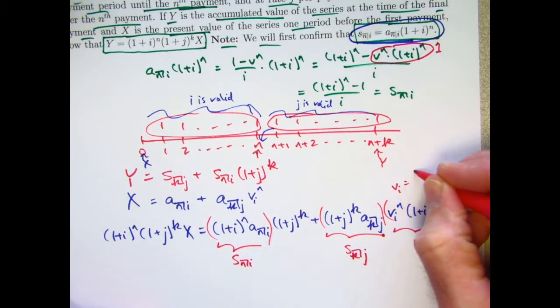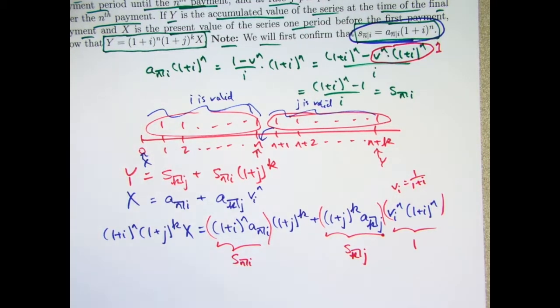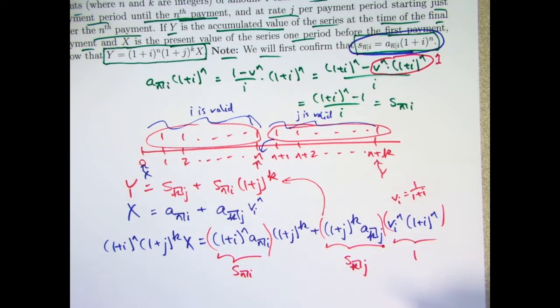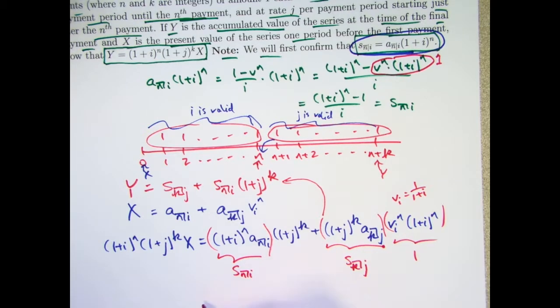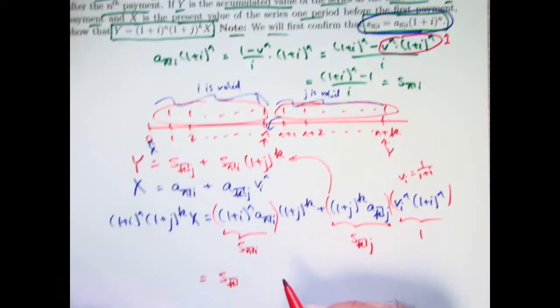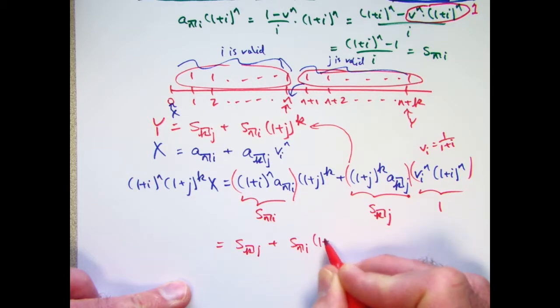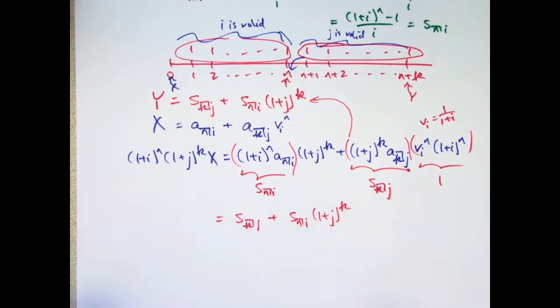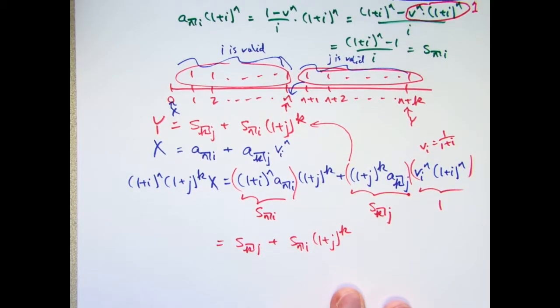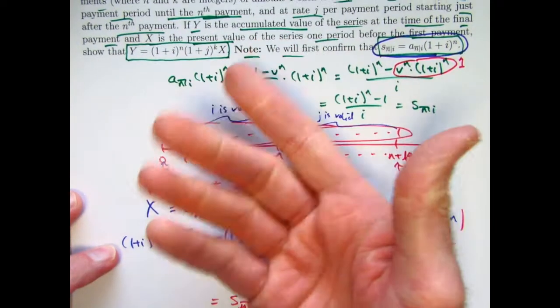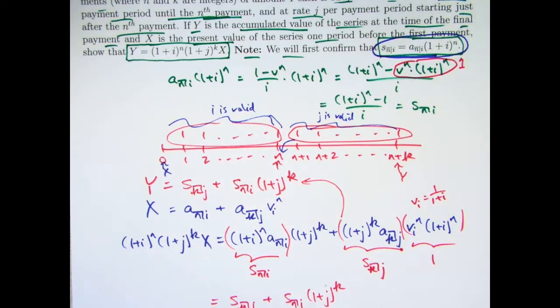I'm using a subscript of i because this discount factor goes with i. As you look over this thing and compare it with this, you realize we're done. Maybe for extra emphasis, this is the same as s_k,j + s_n,i * (1+j)^k. Kind of an abstract problem, lots of symbols, very easy to make a mistake, but it is confirming something that's very intuitive. You want to intuitively know these kinds of equations and be able to reason them out very quickly, but we are confirming that they do indeed work algebraically, which is important.